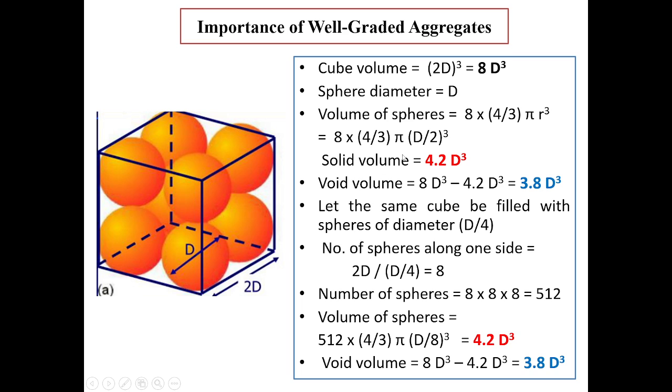That is 8 × (4/3) × π. Radius r is diameter/2. The diameter is D, therefore radius is D/2, so it is (D/2)³. Therefore, the solid volume of 8 spheres put together is 4.2D³. Therefore, obviously, the void volume, that means the volume which is left out inside the cube, will be total cube volume 8D³ minus the solid volume of all 8 spheres. The answer is 3.8D³.